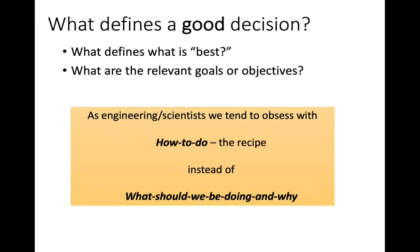As engineers and scientists, we tend to obsess with how to do — in other words, how can we do the best possible job of solving some problem? We oftentimes forget that what we should be doing is asking what we should be doing and why. If we are not doing the right thing, it doesn't matter how well we do it — it's still the wrong thing to do. This is very important for engineers and scientists to keep in mind because we are sort of task-focused.